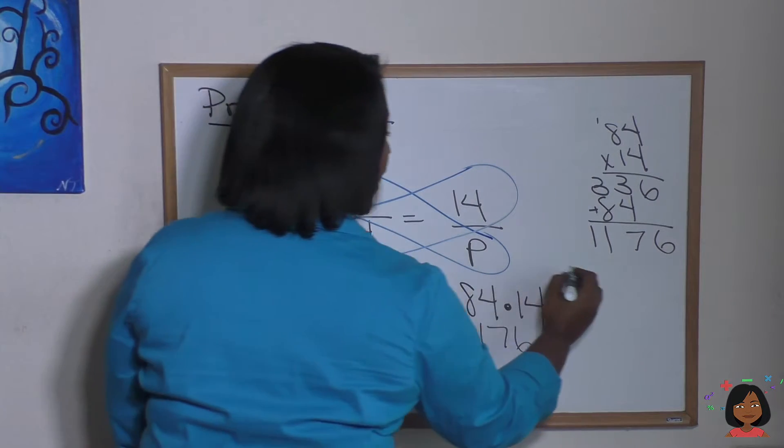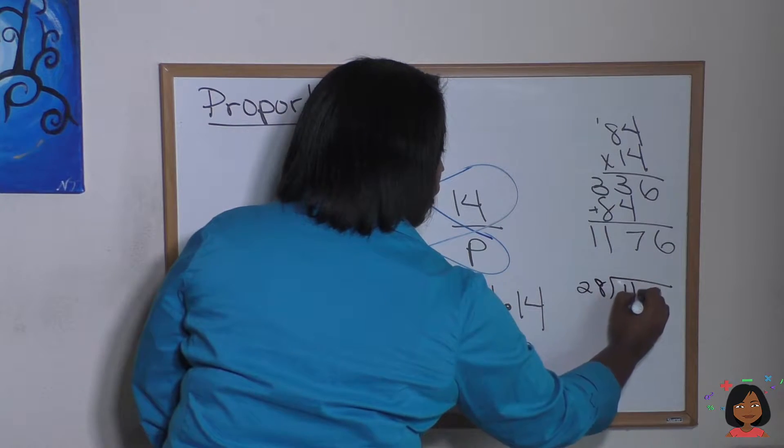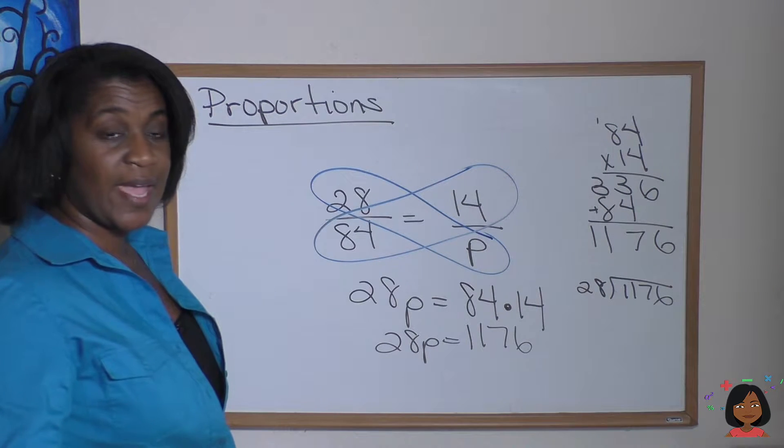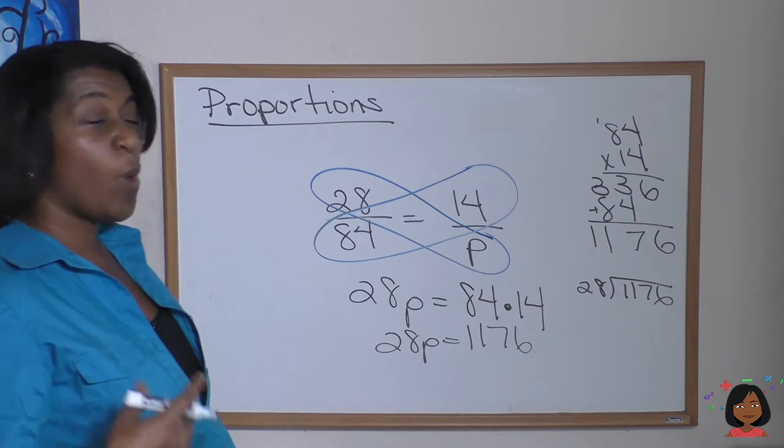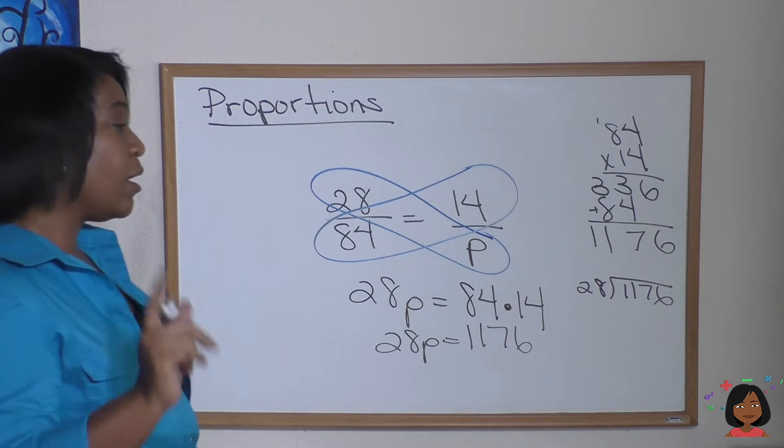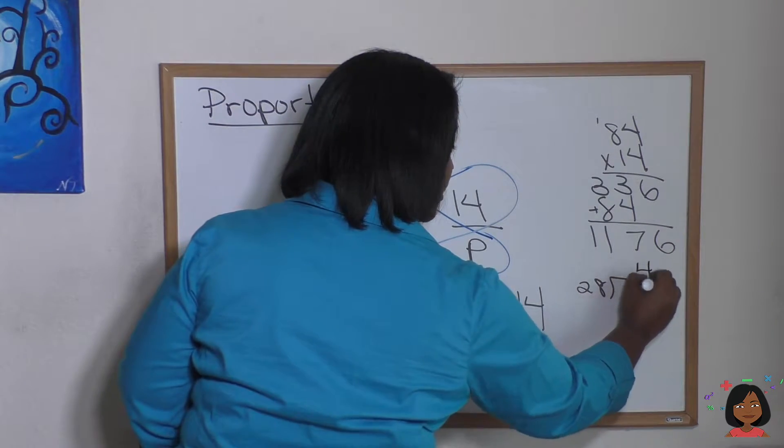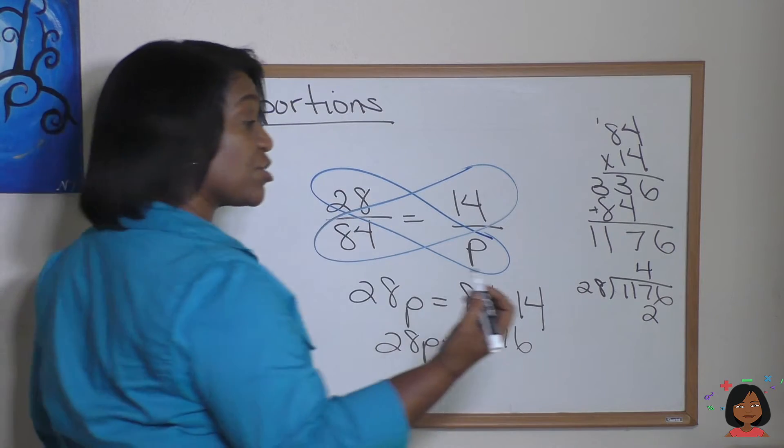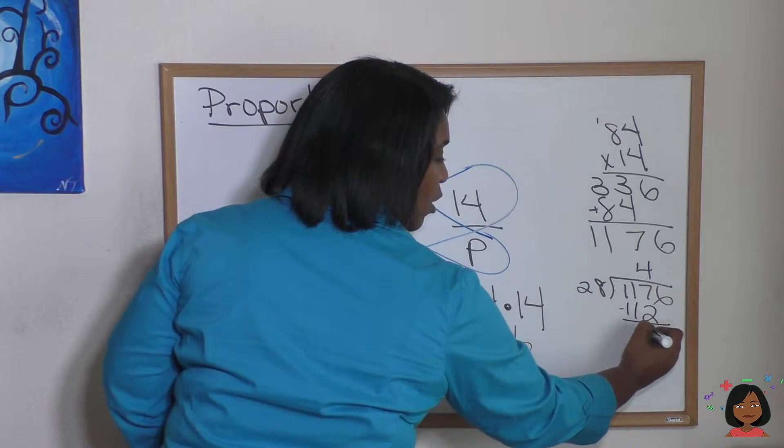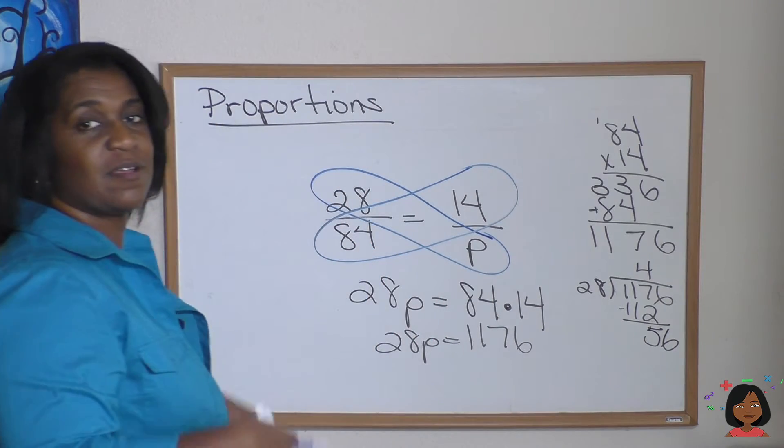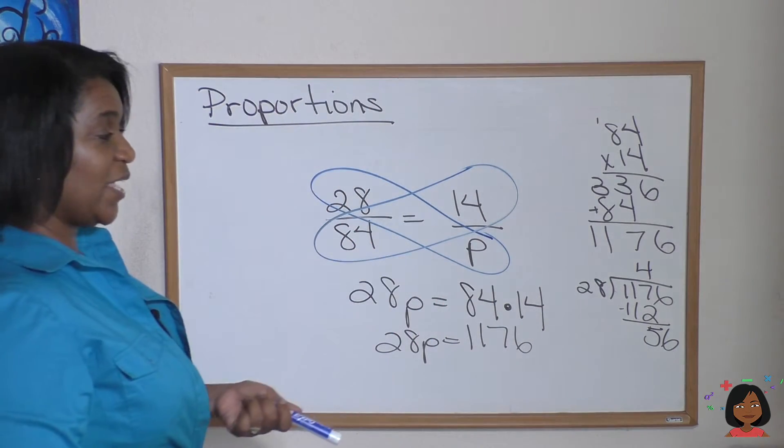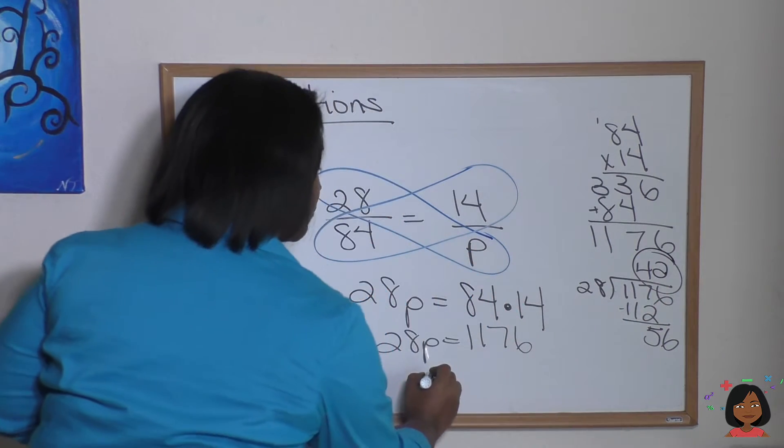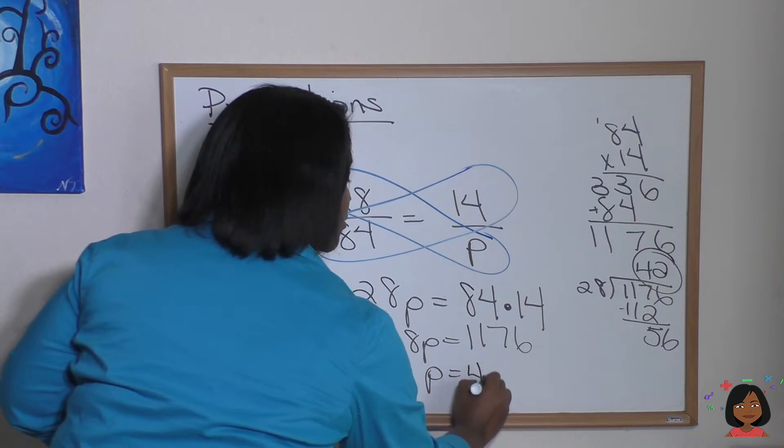Okay. 28 goes into 117. I believe it's 4 times. Let's see. 8 times 4 is 32. 4 times 2 is 8 plus 3 is 11. So it gives us 1, 12 with 5 left over. Bring down our 6. 28 times 2 is 56. So our answer for p, p equals 42.